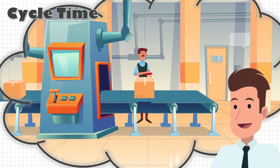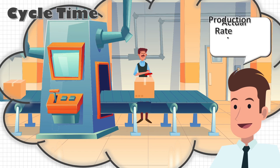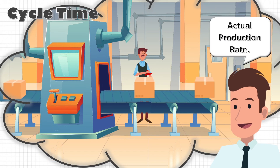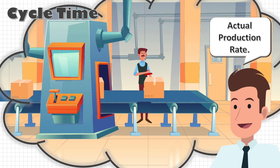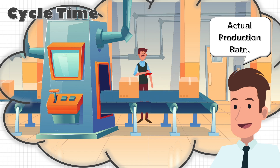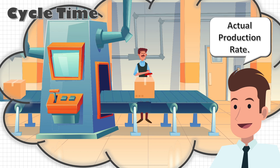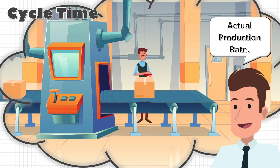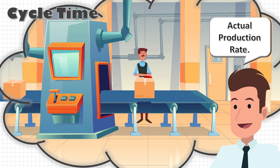Cycle time is the actual rate of production, meaning after how much time one product is actually coming out of my production line. So my actual cycle time has to be less than the target takt time in order to meet the customer requirement. Now takt time and cycle time both are the function of production rate.